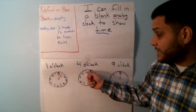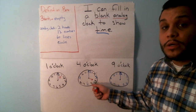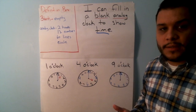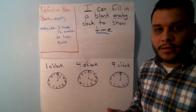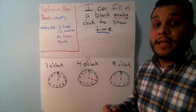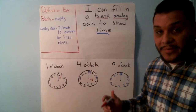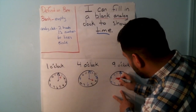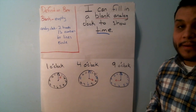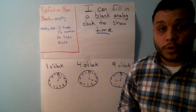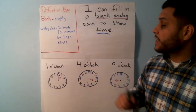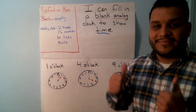What about four o'clock? Notice how the minute hand touches the number but the hour hand only points. And the last one — nine o'clock. Where is the hour hand going to point? Say it louder! One, two, three, four, five, six, seven, eight, nine — yes, nine o'clock! One matches with one, four matches with four, and nine matches with nine. So today when you go back to your work, you are going to fill in a blank analog clock to show time. Awesome job today!